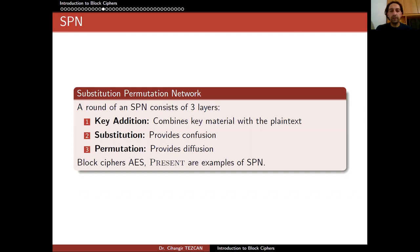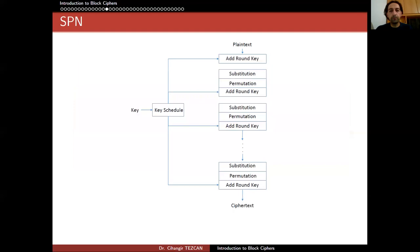A round of SPN consists of three layers: key addition, which combines key material with the plaintext; substitution layer, which provides confusion; and permutation layer, which provides diffusion. Block ciphers like AES or PRESENT are examples of SPN, which we are going to analyze in this course frequently.